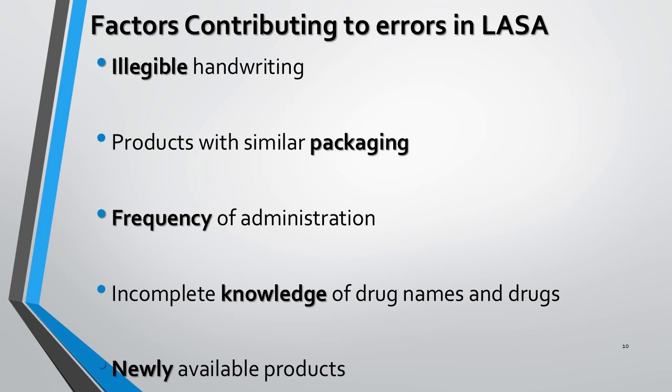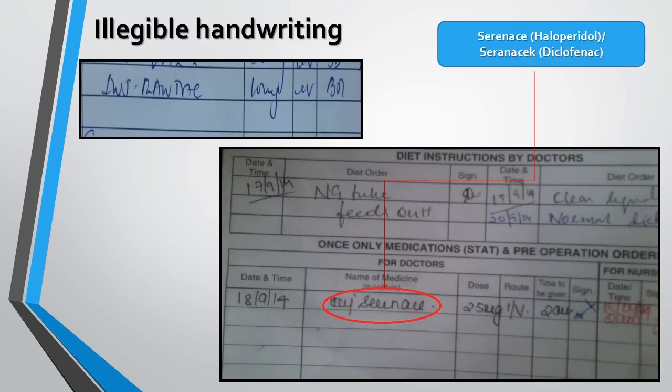New drugs in the market which sound the same as pre-existing drugs, or whose packaging is similar to one already in use, also contribute to errors. For example, Rantac or Ranitidine is so illegibly written that other sound-alike medications might be dispensed instead.